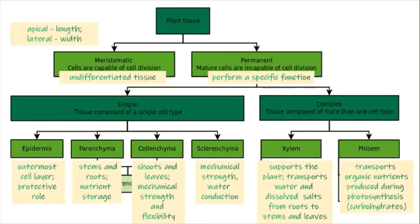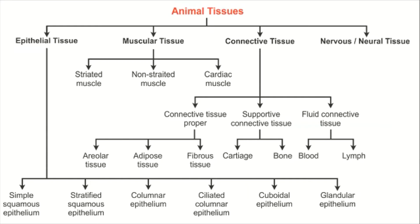Now let's go to animal tissues. The animal tissues are classified into four: we have the epithelial tissue, the muscular tissue, the connective tissue, and the nervous or neural tissue. This diagram summarizes the different tissues and their subtypes.